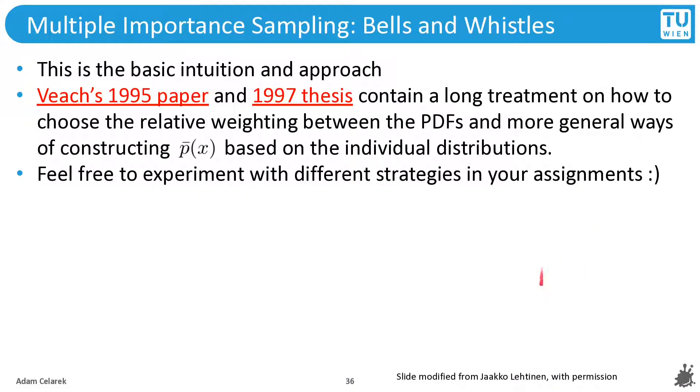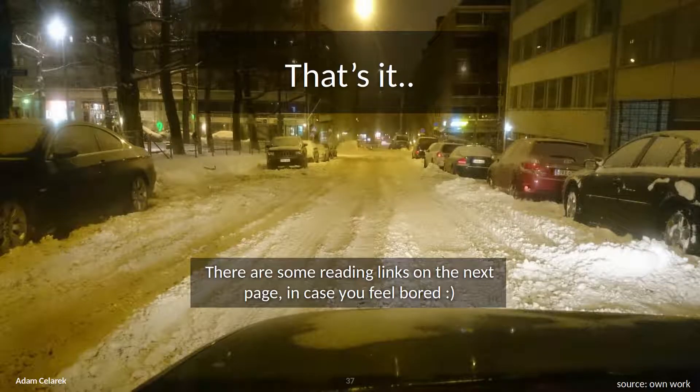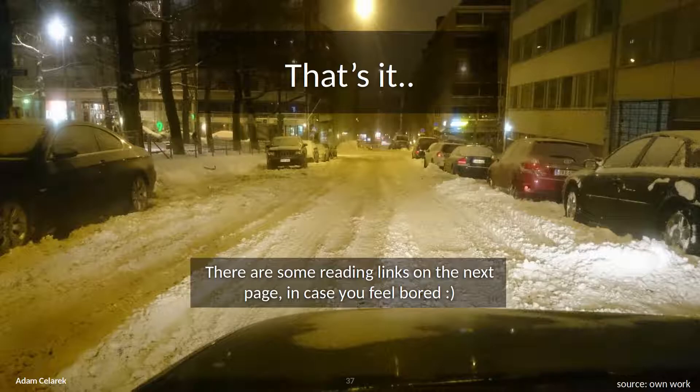And this is the basic intuition and approach. You can look into these papers. They contain a long treatment on how to choose the relative weighting and they have a lot more theory behind it. Feel free to experiment with different strategies. For instance, with the power heuristic. Or in the papers there are also some other heuristics in your assignments. Okay. There are some reading links again. And you will be able to check them out in the slides on our homepage. Thank you.